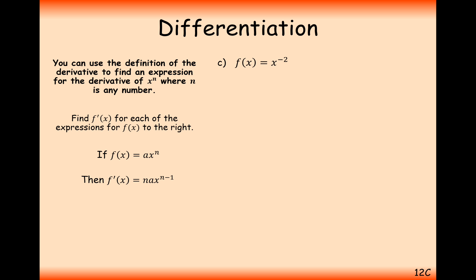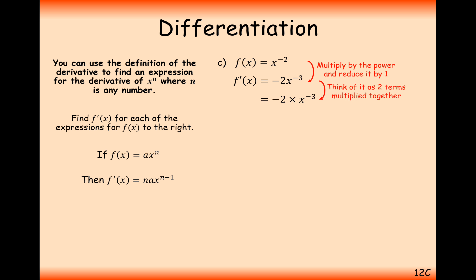Some more: f(x) equals x to the minus 2, so minus 2 gets multiplied to the front, and then minus 2 take away 1 is minus 3, giving minus 2x to the minus 3. Writing this as a fraction: split up x to the minus 3, rewrite as a fraction, to get minus 2 over x cubed. A classic mistake would be to assume the 2 is also powered by the minus 3, giving something like minus 1 over 8x cubed — which is wrong. The 2 stays on the numerator.